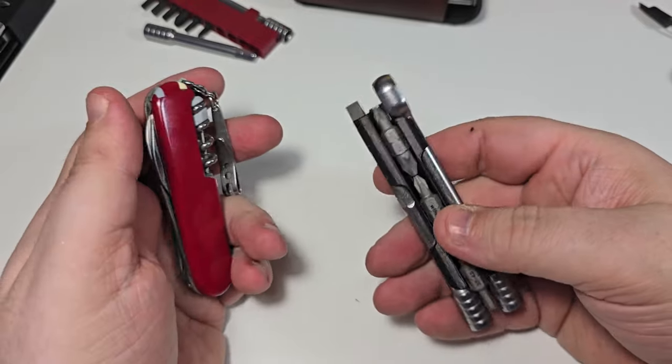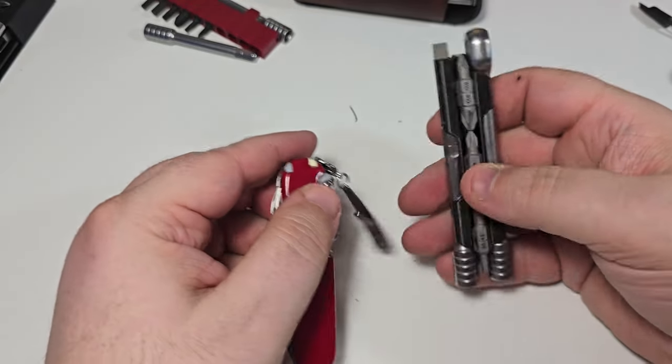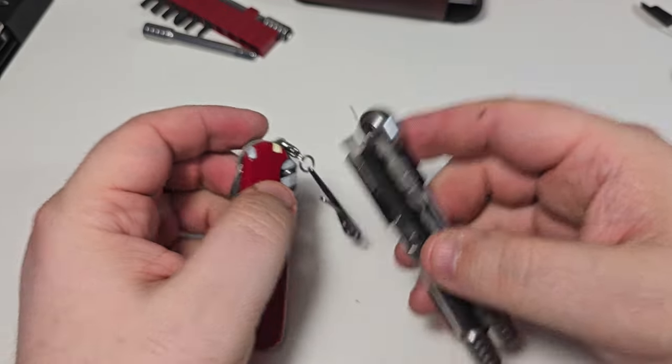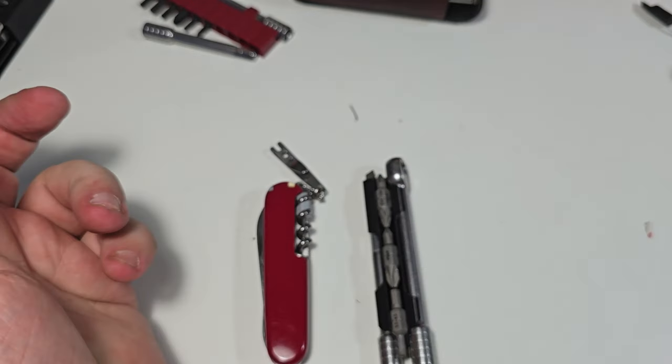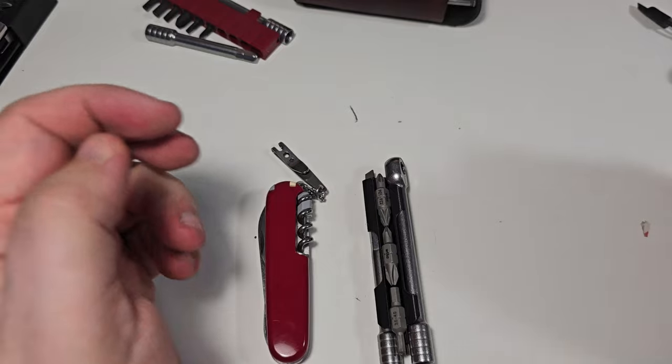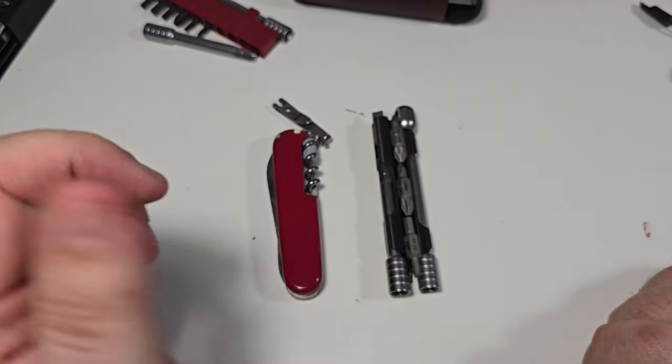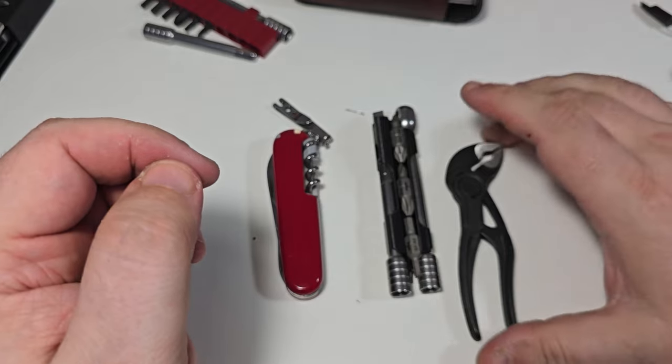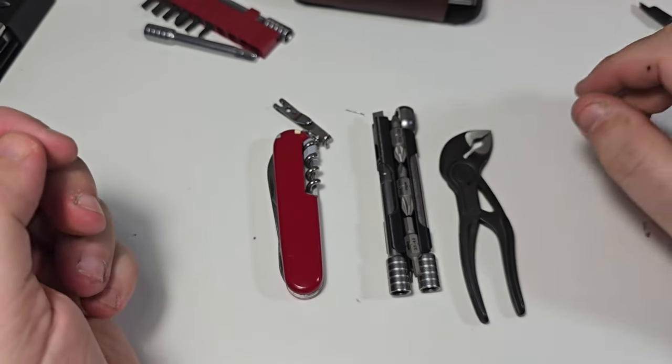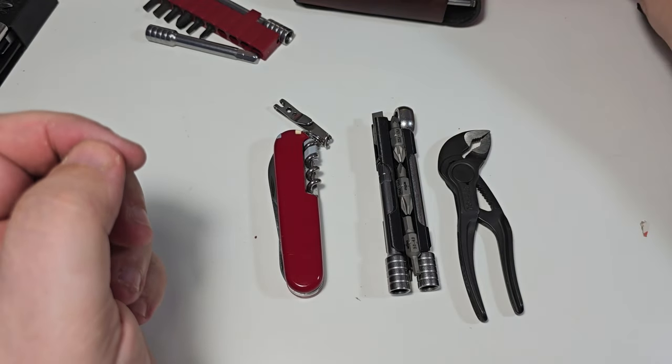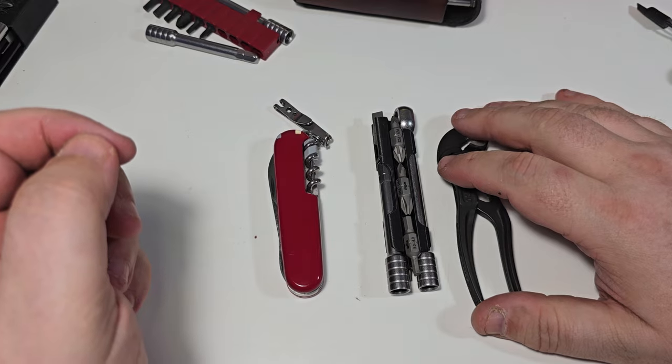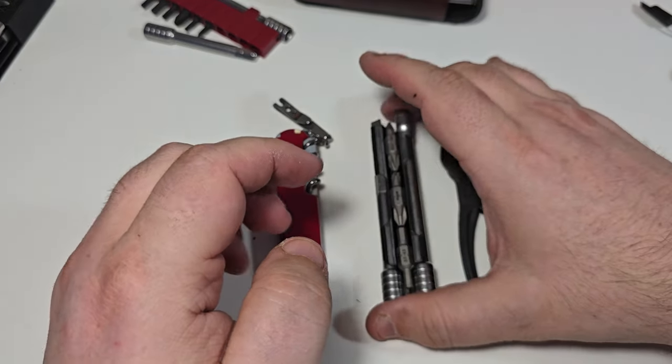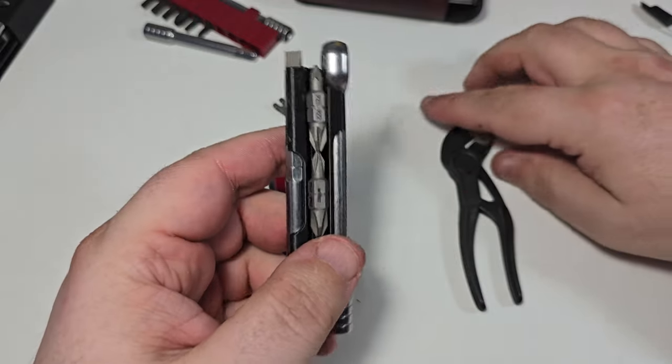I see people who are trying to carry this with the Victorinox are also carrying a Knipex Cobra. At the moment, this is not integrated in this toolkit.